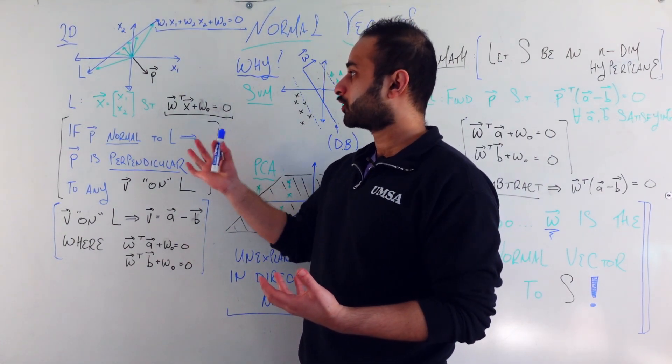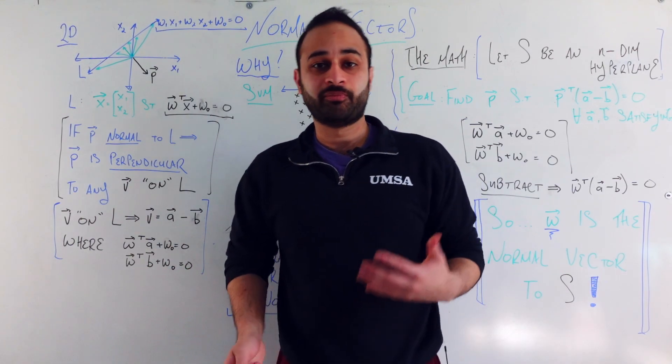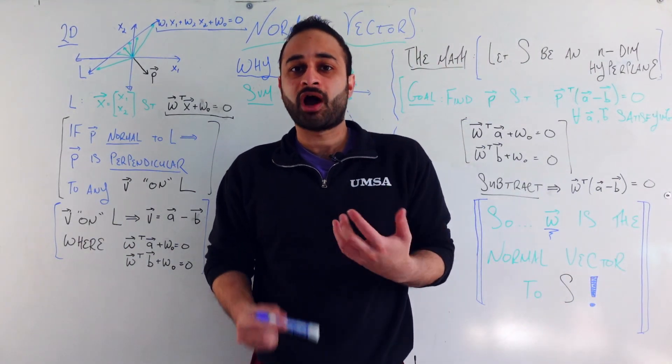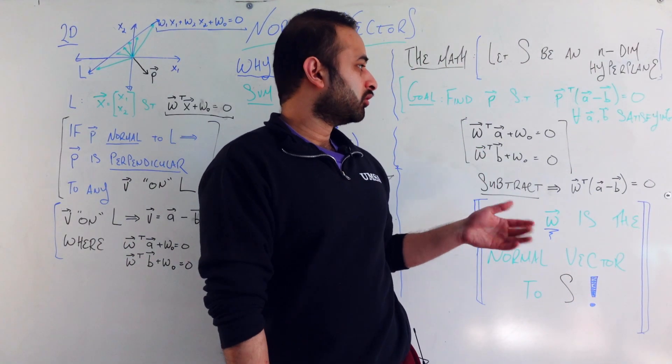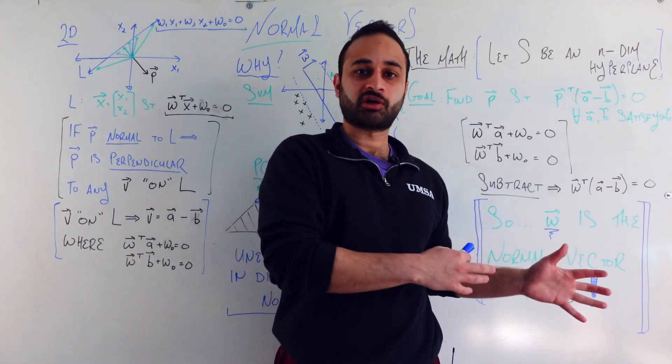First we're going to define from scratch what is a normal vector. Then we are going to talk about some of the big places normal vectors show up in data science down the road so you can have an intuition about why we care. And finally we'll talk about how to mathematically derive the equation for a normal vector under certain circumstances.